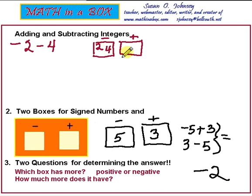Now the two questions: which box has more? There's none in the positive box, so obviously the negative box has more. How much more does it have? There's nothing in the positive box, so the negative box has 6 more. The answer to our expression, negative 2 minus 4, is negative 6.